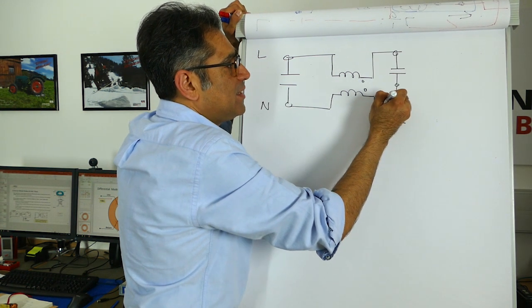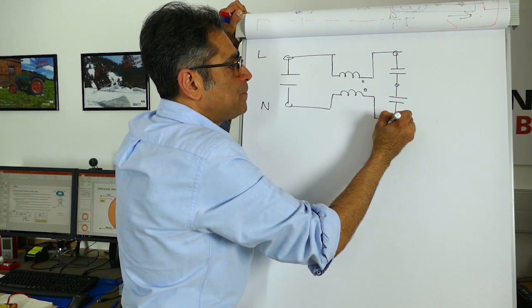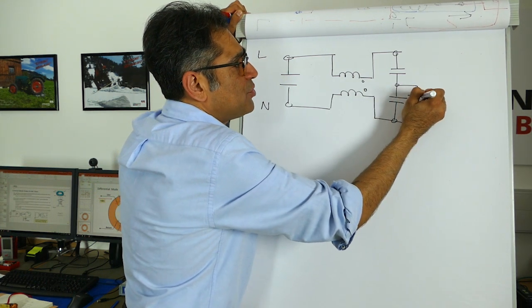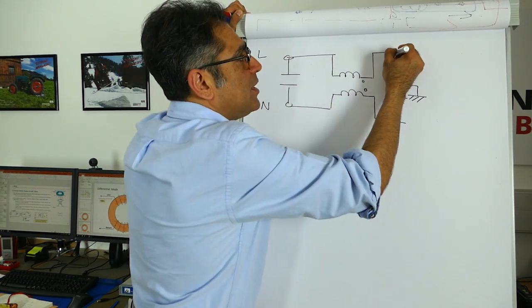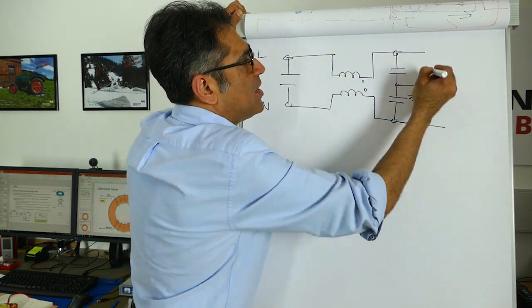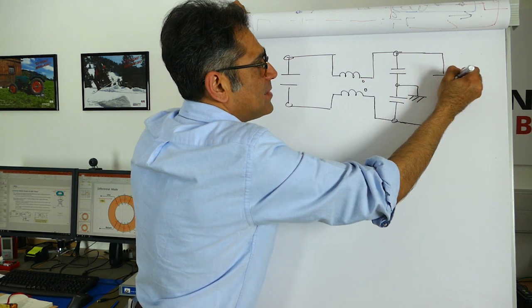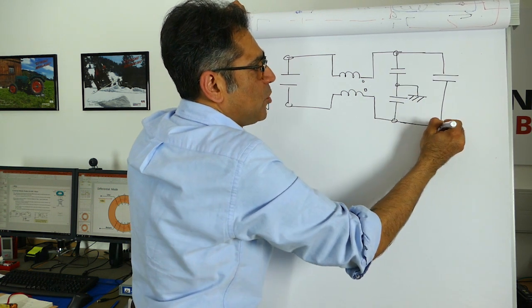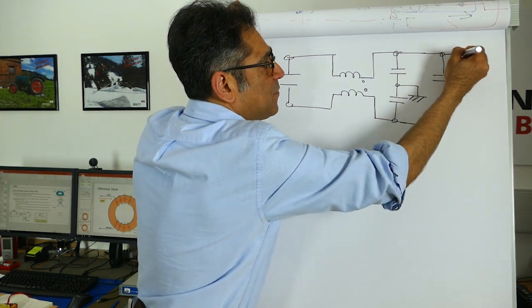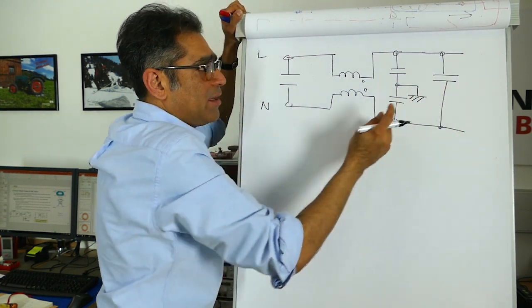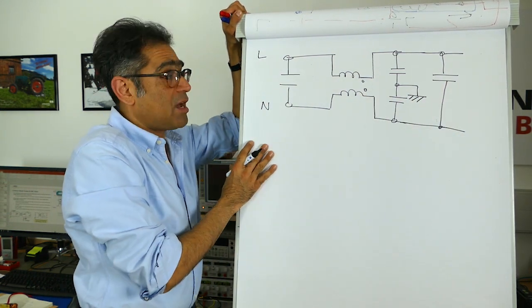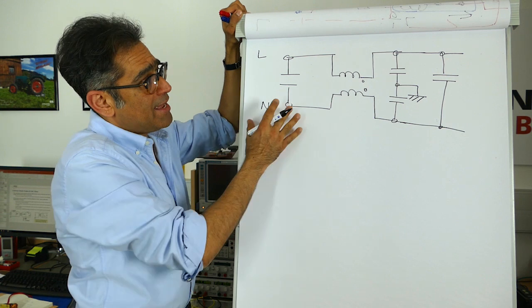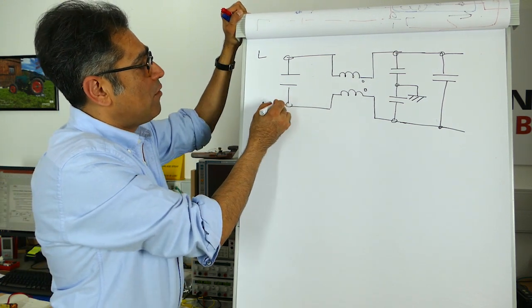and then you usually have a bigger capacitor that is the differential mode capacitor and very often they actually omit the damping components either in the circuit diagram or altogether in the filter and that is a very common way of looking at a circuit diagram of a line filter or an EMC filter.